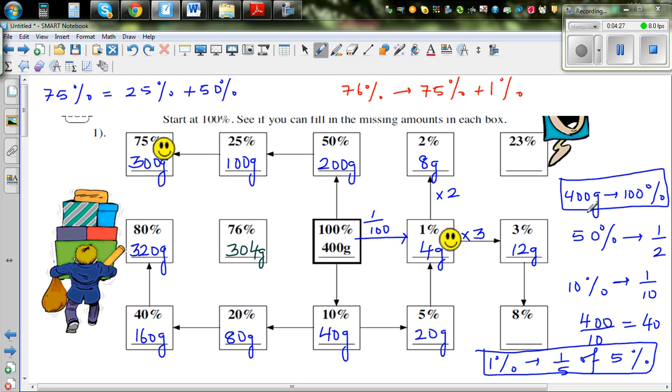And 23%. So do we know 20%? Let me draw a star. Can you find 20% somewhere? Well this is 20%. And do we know 3%? Yes, we know 3%. So 20% and 3% gives you 23%. So this is 92 grams.